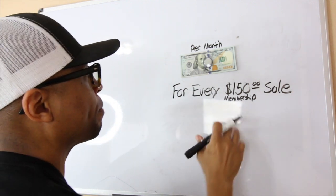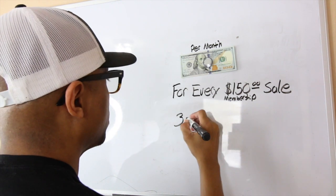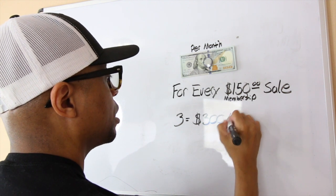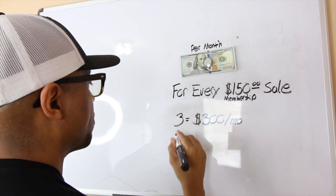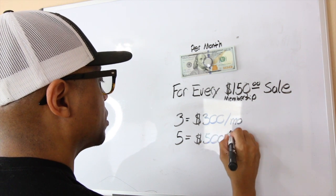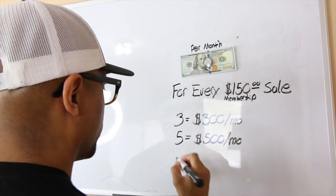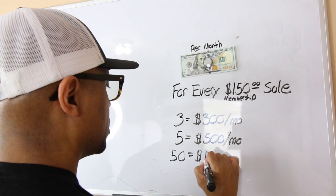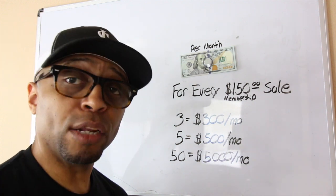So what does that mean? If you need to make $300 a month in residual income, just refer three people. If you need $500, that's five sales. If you need to make $5,000 a month, that's 50 sales — $5,000 a month in residual income.